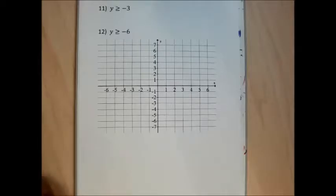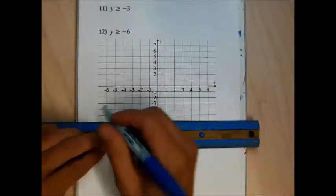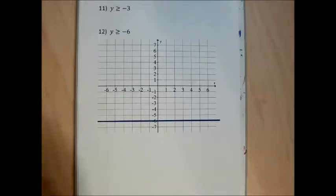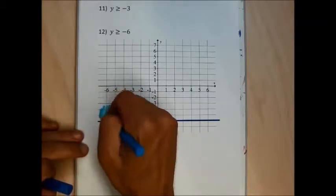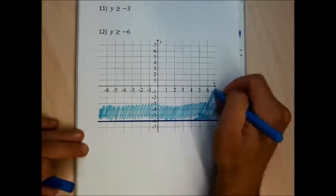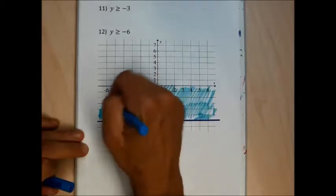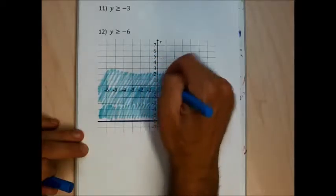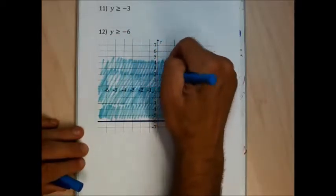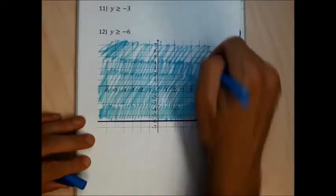For problem 12, I see y greater than or equal to negative 6. I need a solid line because of the or-equal-to. So I'm going to draw a solid horizontal line through y equal to negative 6. It's a greater than, so I'm trying to find points whose y-coordinates are bigger than negative 6. Y's get bigger as we go up, so I'm going to shade every single point above this line.